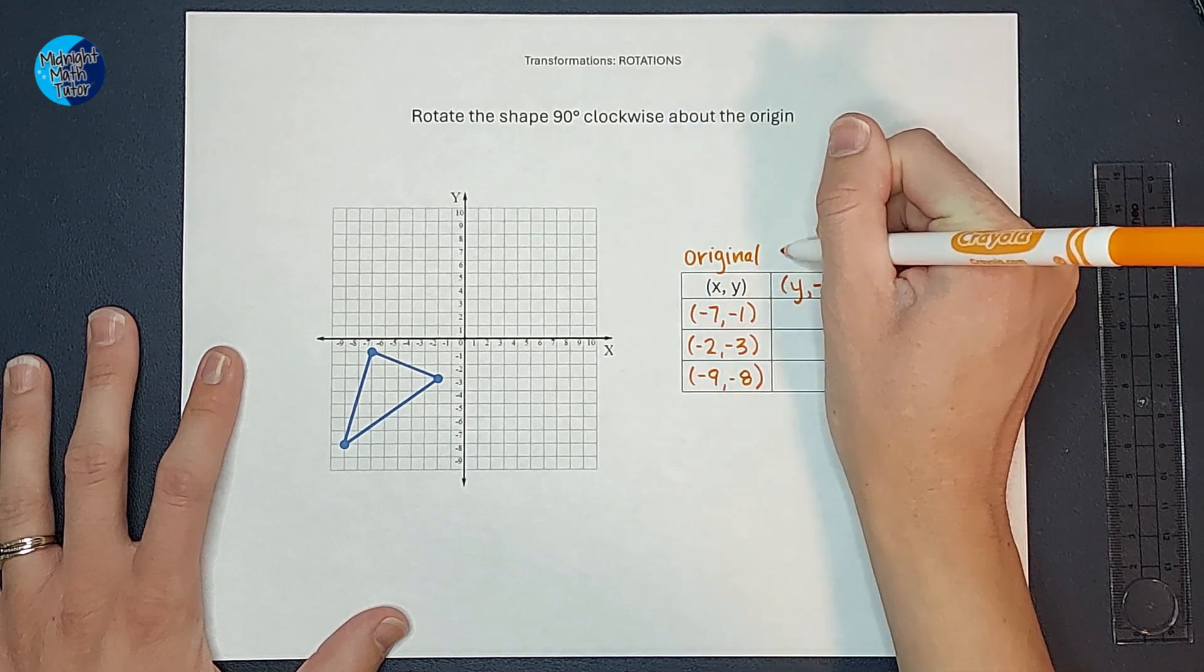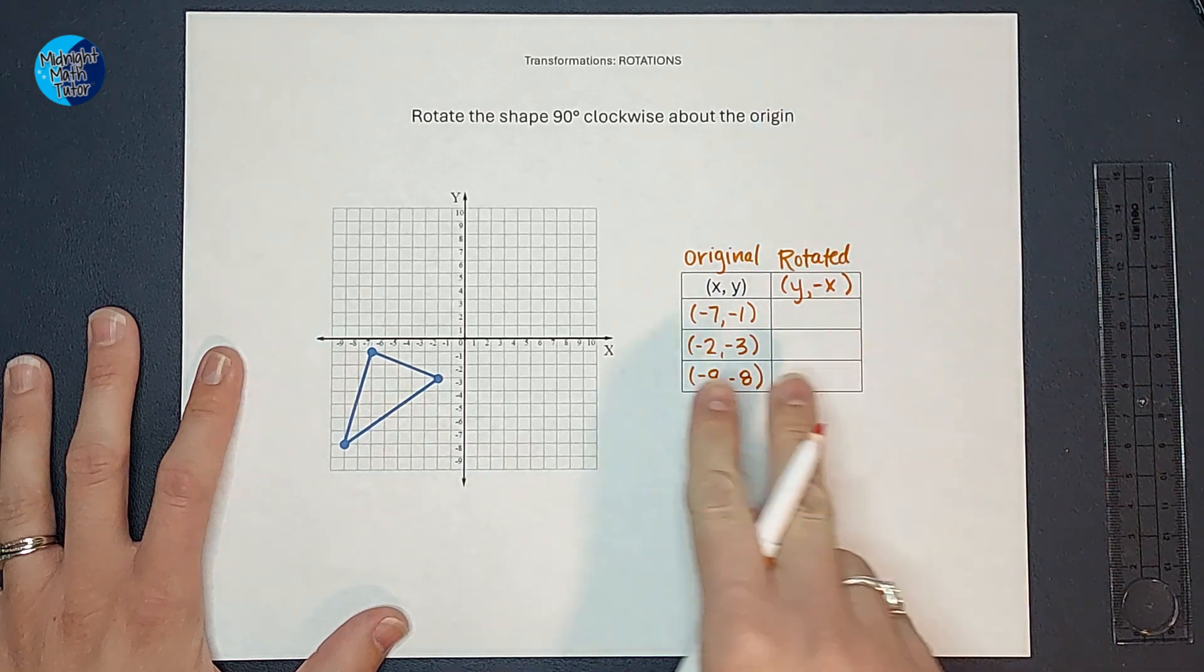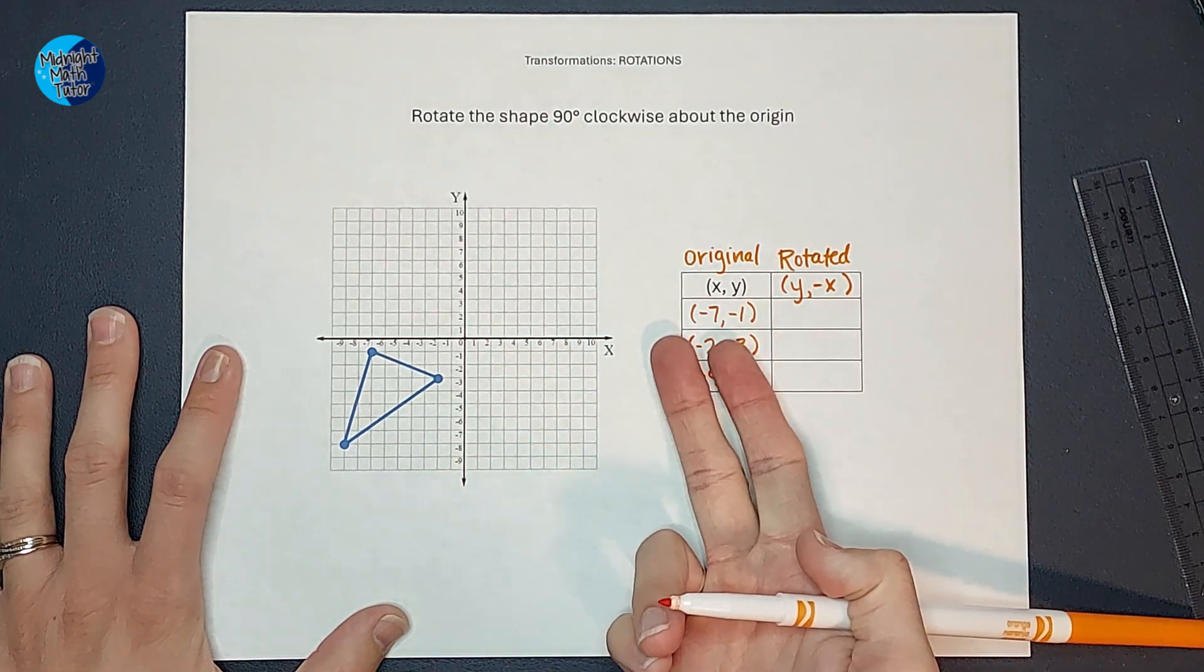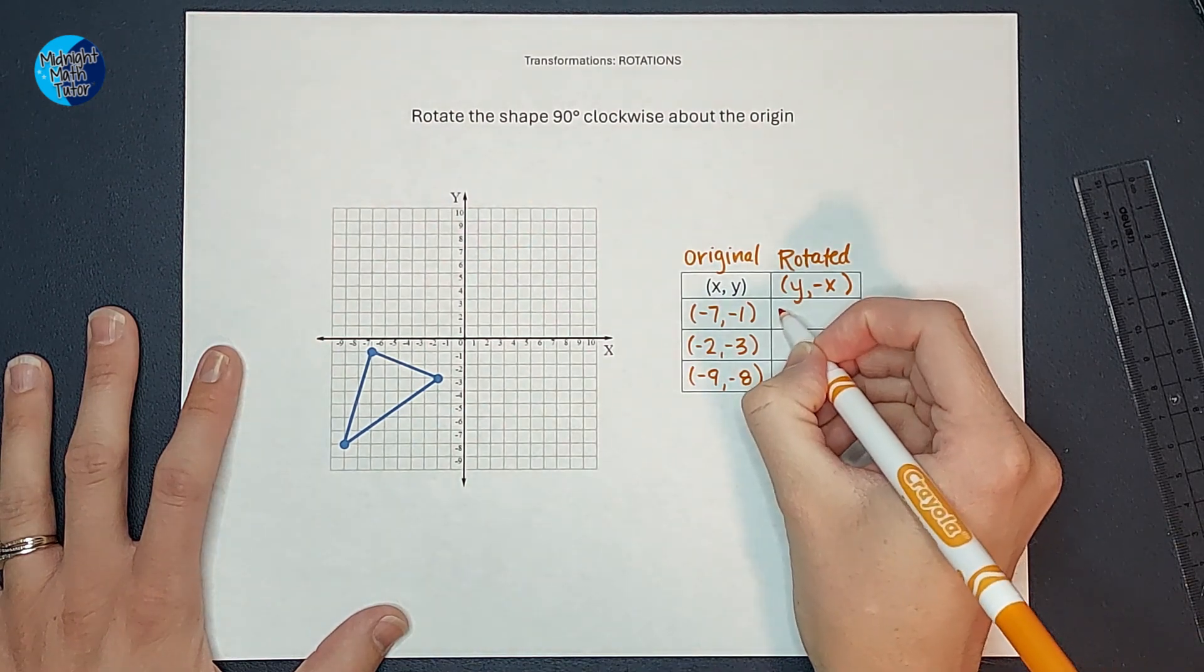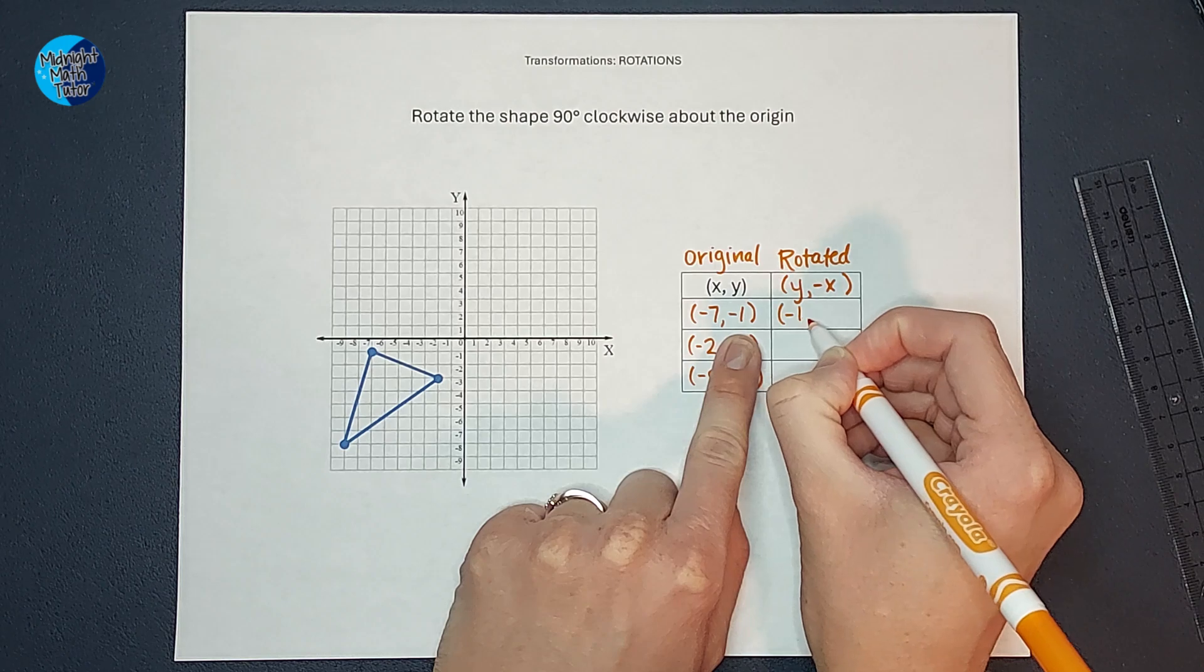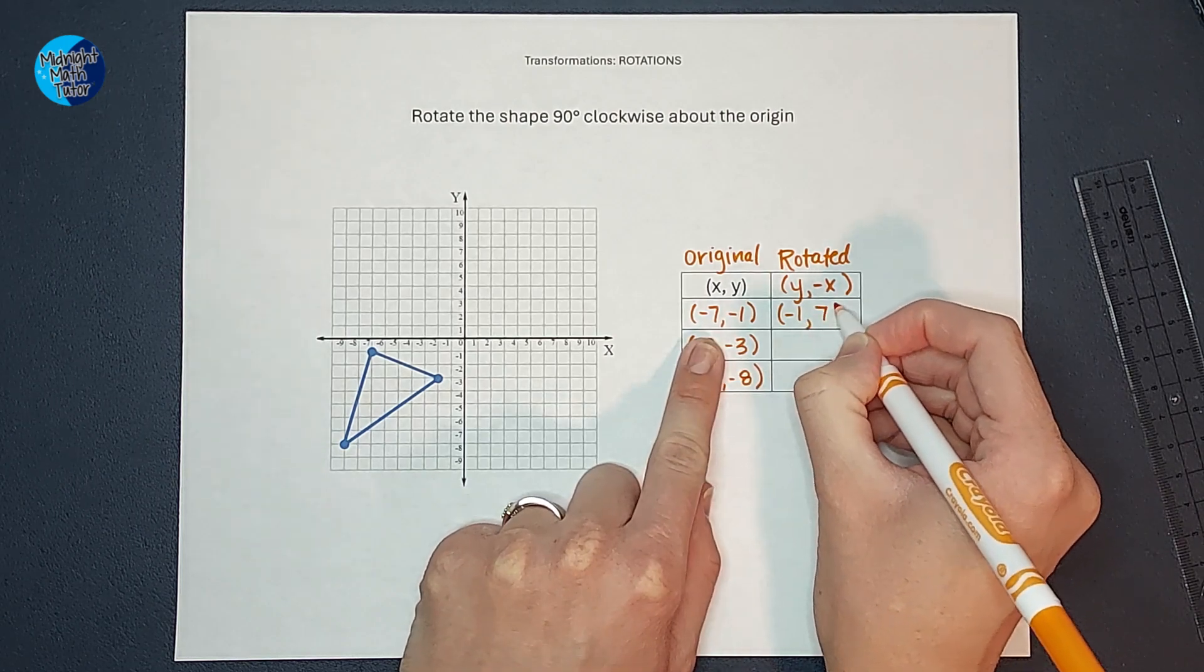And now to figure out my rotated triangle, I am just going to switch x and y and change x's sign. So I'm going to write the y first, negative one, and instead of a negative seven, it's going to be a positive seven.